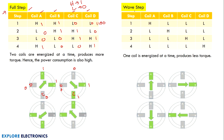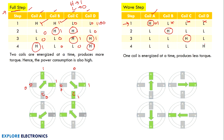There is another method called wave step rotation where only one coil is energized at a time. In full step rotation we energize two coils simultaneously. In wave step, we energize only one coil — H indicates value 1 and 0 indicates not energized. Coil A is energized first for one step, then only coil B, then coil C, then coil D. This method also completes rotation in four steps but uses only one coil, producing less torque.